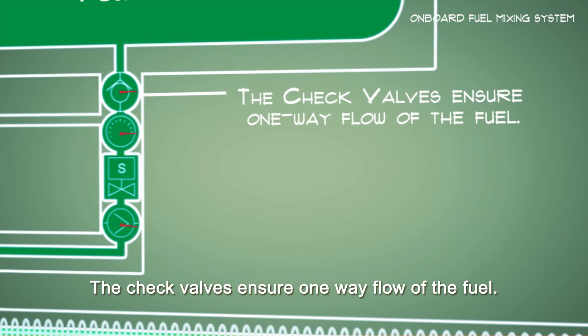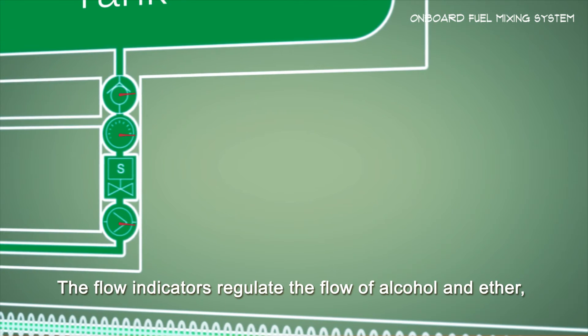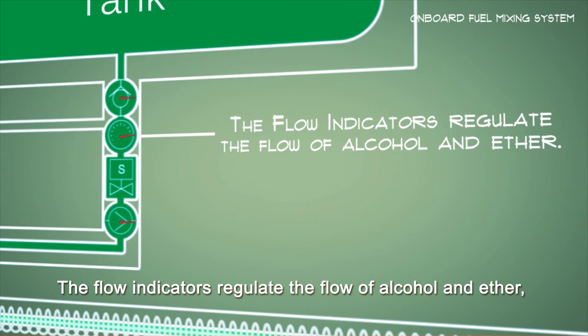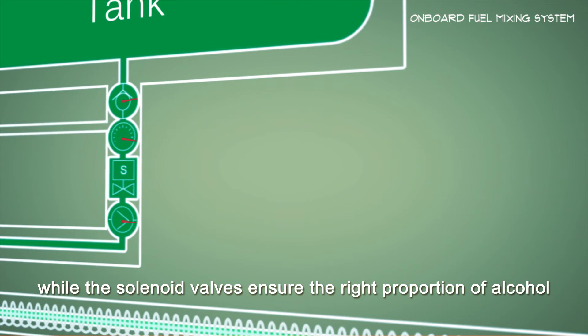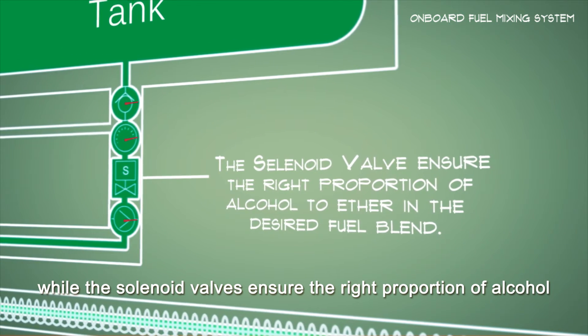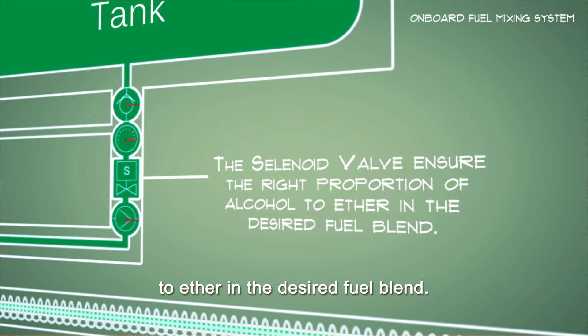The check valves ensure one way flow of the fuel. The flow indicators regulate the flow of alcohol and ether. While the solenoid valves ensure the right proportion of alcohol to ether in the desired fuel blend.